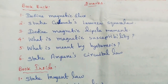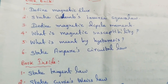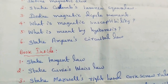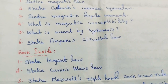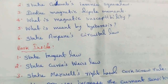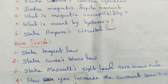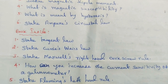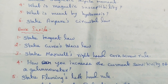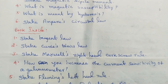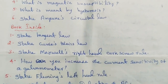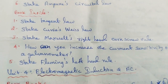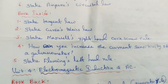Book inside questions: State tangent law. State Curie-Weiss law. State Maxwell's right-hand cork screw rule. How can you increase the current sensitivity of a galvanometer? State Fleming's left-hand rule.